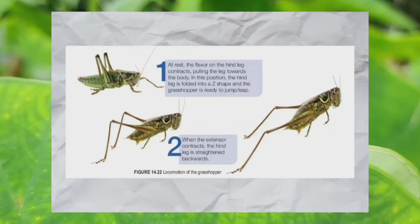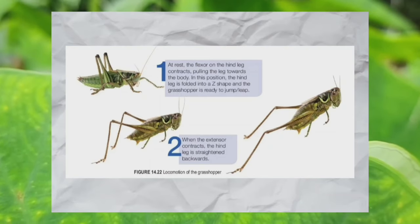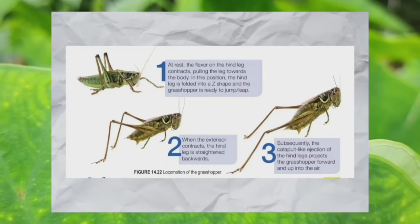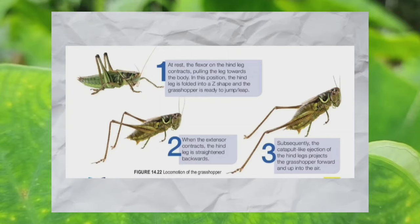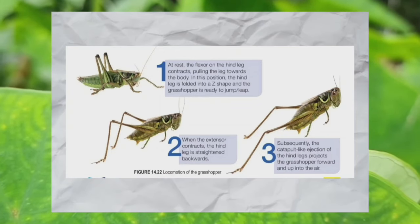When the extensor contracts, the hind leg is straightened backwards. The catapult-like ejection of the hind leg projects the grasshopper forward and up into the air.